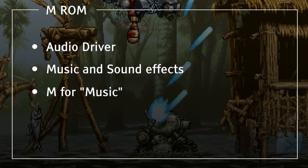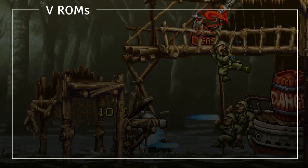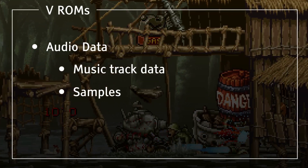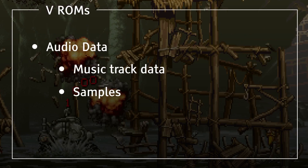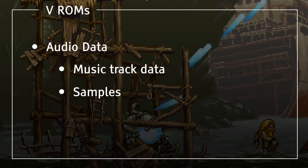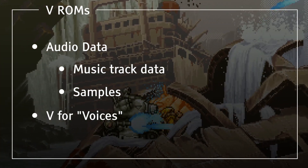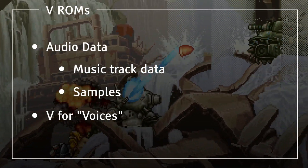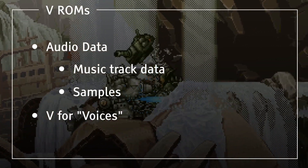You can think of M as standing for music. The V-ROMs contain audio data, such as music tracks and samples. The audio driver in the M-ROM will use these to feed data to the sound chip. To remember, V can stand for voices. That one is a bit of a stretch, but it does work, at least for me.